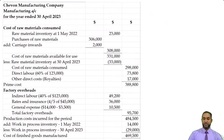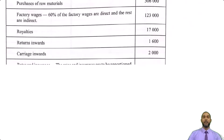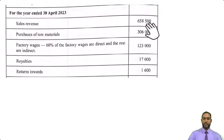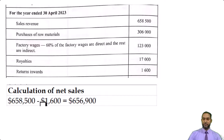Okay, so that's B part one. Now B part two says calculate the net sales figure. Back up in the information for the year ended 30th April 2023, sales revenue is $658,500, but we have returns inwards of $1,600. So the net sales is simply the difference between the two: $658,500 minus $1,600 is $656,900.